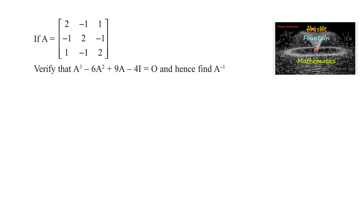If A is a 3×3 matrix [2, -1, 1; -1, 2, -1; 1, -1, 2], then verify that A³ - 6A² + 9A - 4I = 0. Here we consider the identity matrix I as the 3×3 matrix [1, 0, 0; 0, 1, 0; 0, 0, 1].